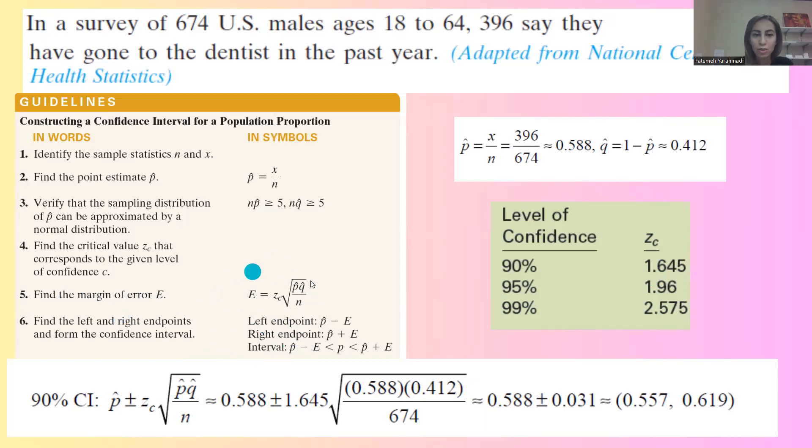Because we're going to construct E or the margin of error or the distance. It follows the formula Z sub C multiplied by square root of p hat, q hat, divided by n.